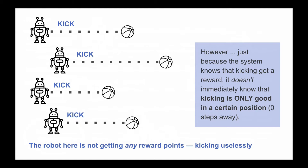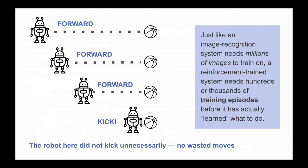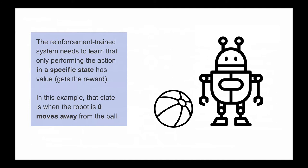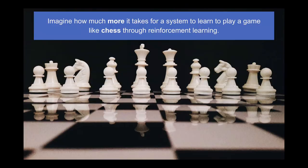Just like image recognition needs many, many epochs of training and millions of images, for reinforcement learning you have to have the agent try to get the reward many, many times — like hundreds of times. Within each episode, the agent might just keep doing the actions at the wrong time or the wrong place and fail many times. It's only after hundreds or possibly thousands of different episodes of reinforcement learning that the system has actually learned what you set out to have it learn.